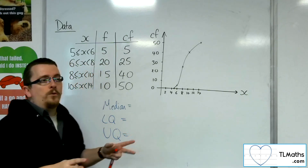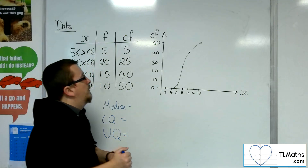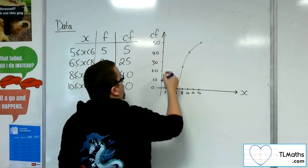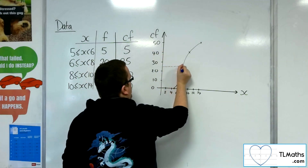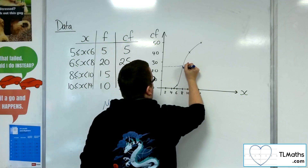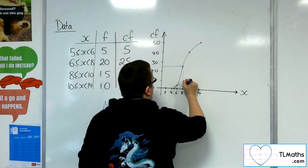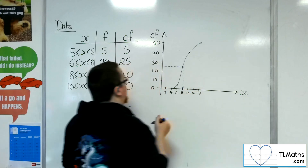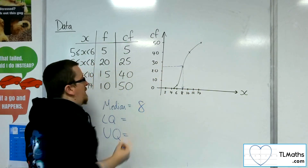So dividing the frequency by 2: 50 divided by 2 gives 25. Go along to your curve and then read off straight down. I'm getting something like 8 for my median.